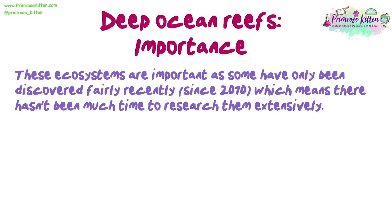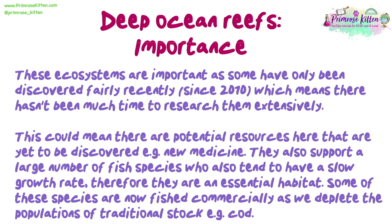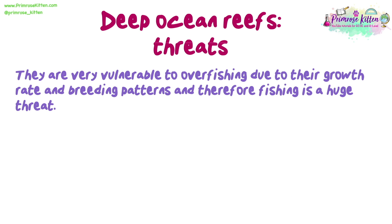The importance of deep ocean reefs: these ecosystems are important, as some have only been discovered fairly recently — since 2010 for example — which means there hasn't been much time to research them extensively. This could mean there are potential resources here that are yet to be discovered, like new medicines. They also support a large number of fish species, who also tend to have a slow growth rate, therefore making them an essential habitat. Some of these species are now fished commercially as we deplete the populations of traditional stock, for example cod. They are very vulnerable to overfishing due to their growth rate and breeding patterns, and therefore fishing is a huge threat.